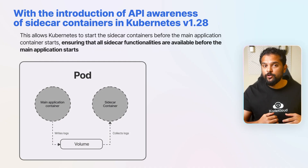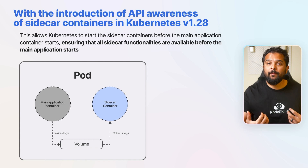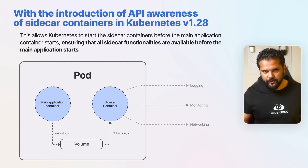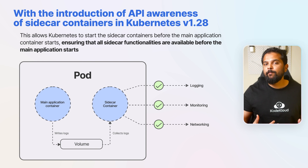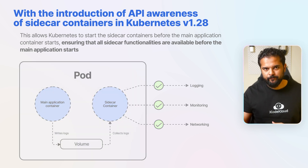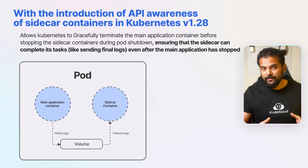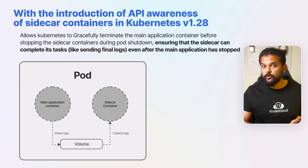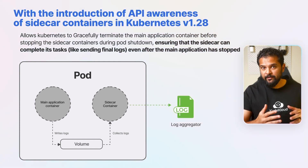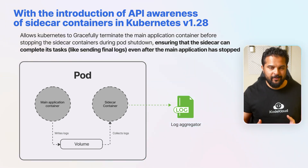With the introduction of API awareness of sidecar containers, sidecar containers can now be explicitly marked in the pod specification. This allows Kubernetes to start the sidecar containers before the main application container starts, ensuring that all sidecar functionalities are available before the main application starts. This will also allow Kubernetes to gracefully terminate the main application container before stopping the sidecar containers during the pod shutdown period, ensuring that the sidecar container can complete its tasks, like sending the final logs even after the main application has stopped.